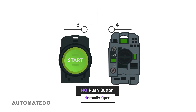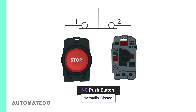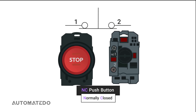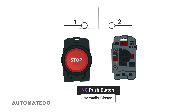The following graphic displays both the symbol representing a normally open push button and its physical appearance from the front and back. To connect it to a circuit, terminals labeled 3 and 4 are used. The next illustration features both the front and back of a normally closed push button, along with its corresponding electrical symbol. Electrical connections to the circuit are made through terminals labeled 1 and 2.